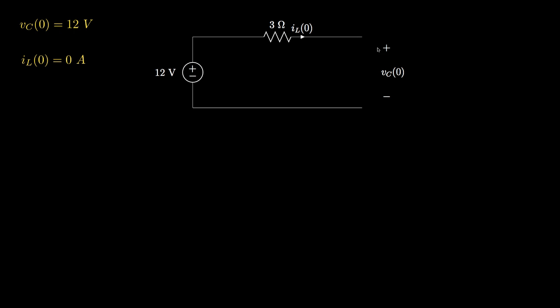Because the capacitor is open, no current flows in this circuit. Accordingly, the capacitor voltage at the time the switch is moved will be equal to the source voltage — 12 volts — and the inductor current will be equal to zero.